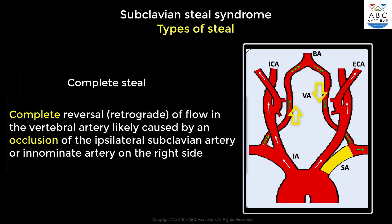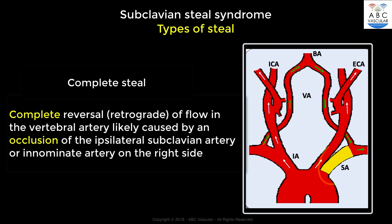A complete steal occurs when both the systolic and diastolic blood flow are retrograde through the vertebral artery, which is ipsilateral to an obstruction or a severe stenosis of the subclavian artery or the innominate artery on the right side. Therefore, the direction of the blood flow within the vertebral artery will not be antegrade as it should normally be.